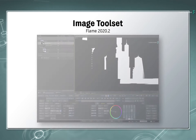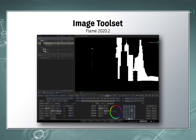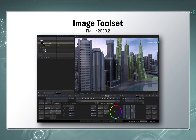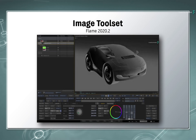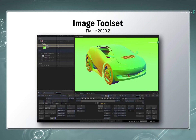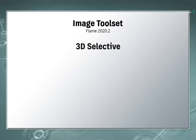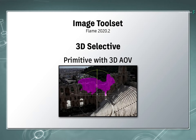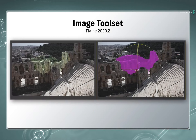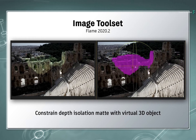In parts 5, 6 and 8 of the Image Toolset series, we looked at the 3D AOV capability, where you could produce a selective matte for your image based on supplied 3D information. So you could create isolation mattes based on the Z-depth of an image, the normals of a 3D object, as well as the movement of an image based on motion vectors. In the Flame 2020.2 update, you'll learn about a new tool to refine your 3D AOVs known as Primitives. This allows you to constrain the effect of a 3D AOV by placing virtual 3D objects in 3D space.